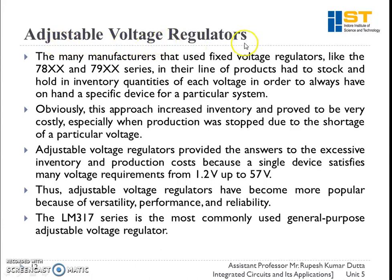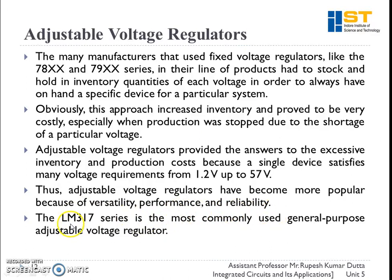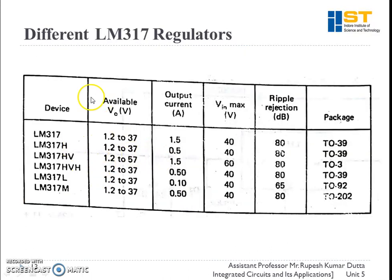Next is adjustable voltage regulators. The 78XX and 79XX series are both fixed voltage regulators, meaning they can only be used when a fixed voltage requirement is known. When we have a different voltage requirement, we need to use adjustable voltage regulators. These provide an answer to excessive inventory and production costs because a single device satisfies many voltage requirements from 1.2V up to 57V. Adjustable voltage regulators have become more popular due to their versatility, performance, and reliability. The LM317 series is the most commonly used general-purpose adjustable voltage regulator.